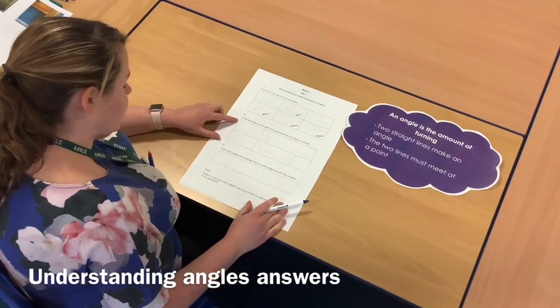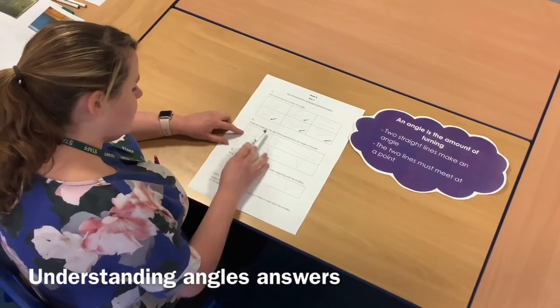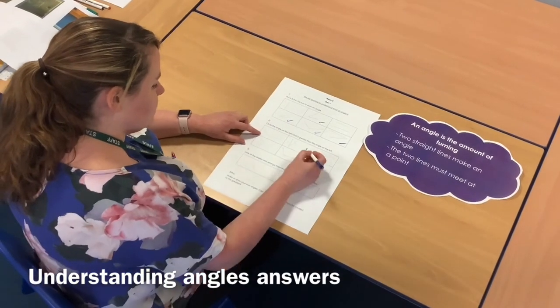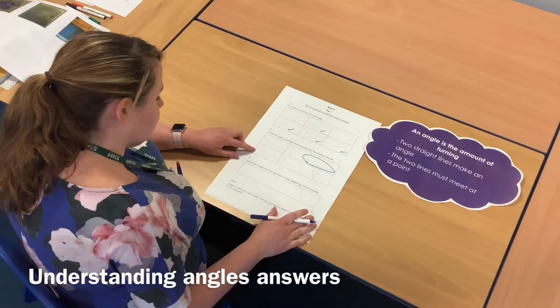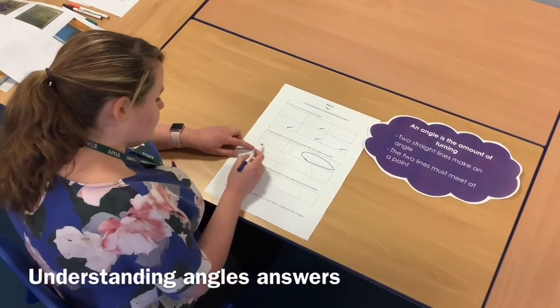Number two, circle the angle on the right that is greater than the angle on the left. That was this one. The second one, the angle that is greater than this one.